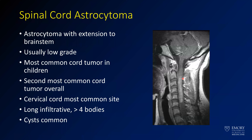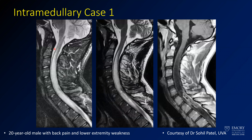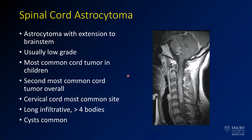This is a different astrocytoma with some extension up into the brainstem. Most commonly, astrocytomas in the spine are low grade. They're more common in children and represent the second most common cord tumor. The cervical cord is the most common location and they tend to be infiltrative, with long segments of T2 abnormality. Unlike brain tumors, low-grade astrocytomas in the cord tend to enhance, so you don't necessarily know the grade from its degree of enhancement.